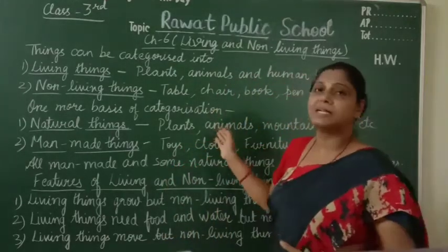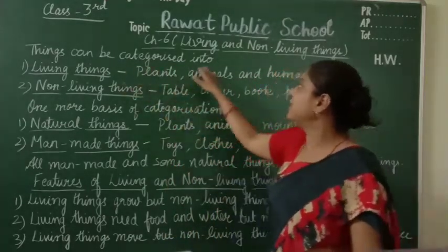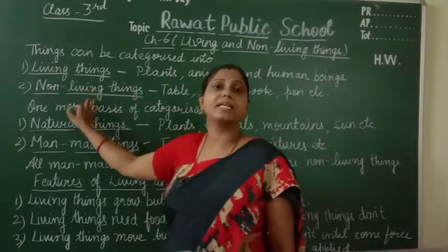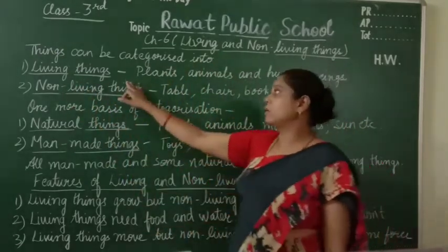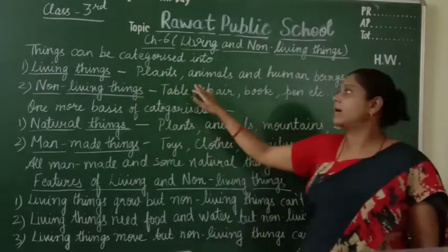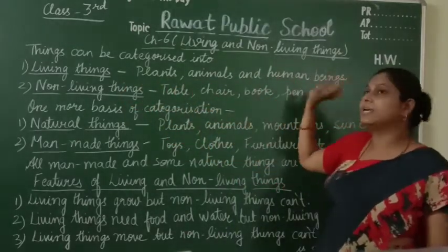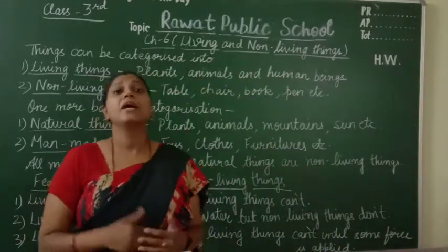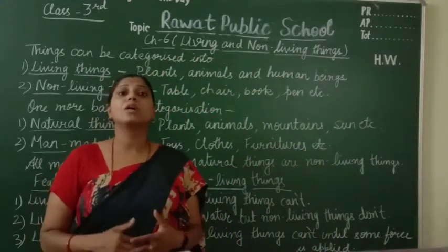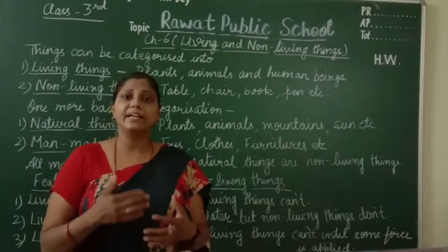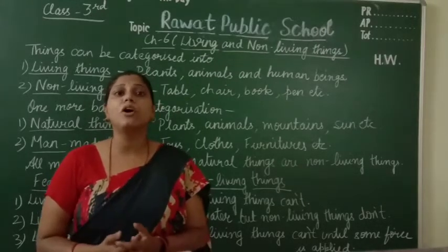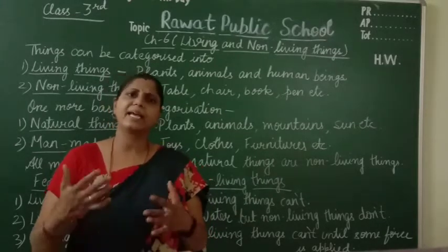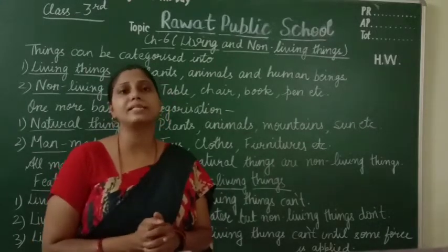Now let's start the chapter. Things can be categorized into living things and non-living things. Examples of living things are plants, animals, and human beings. Why are they living things? Because they grow, they need food for getting energy, and they reproduce. There are many things that living things can do.